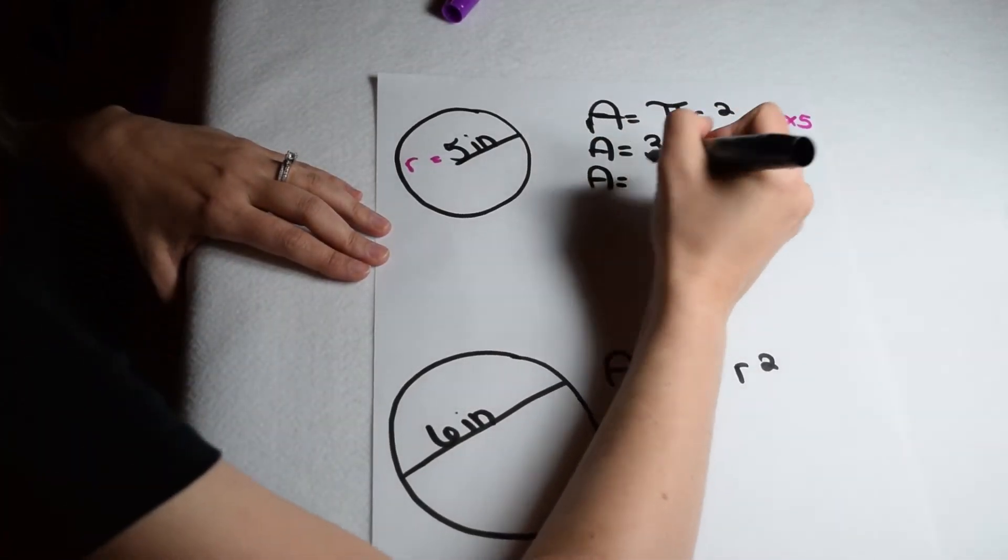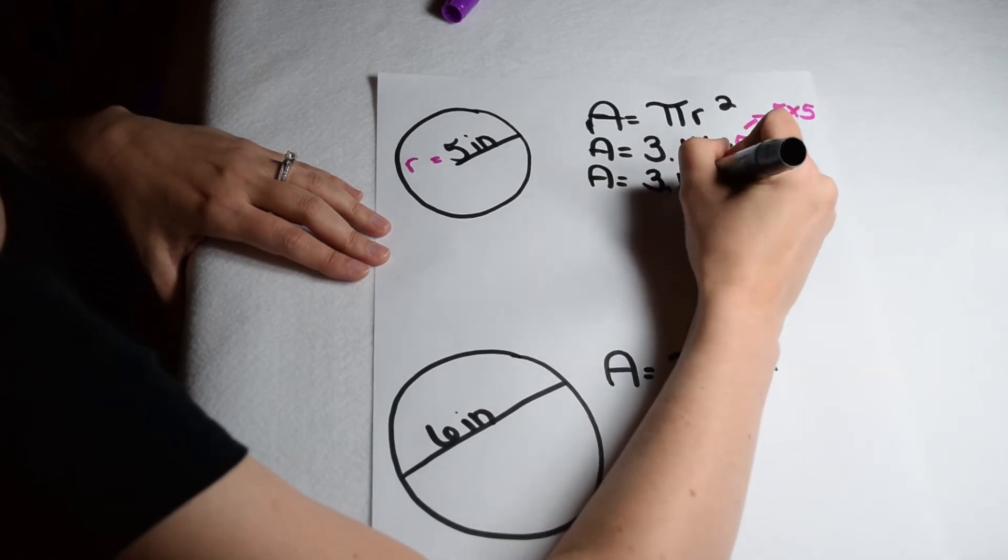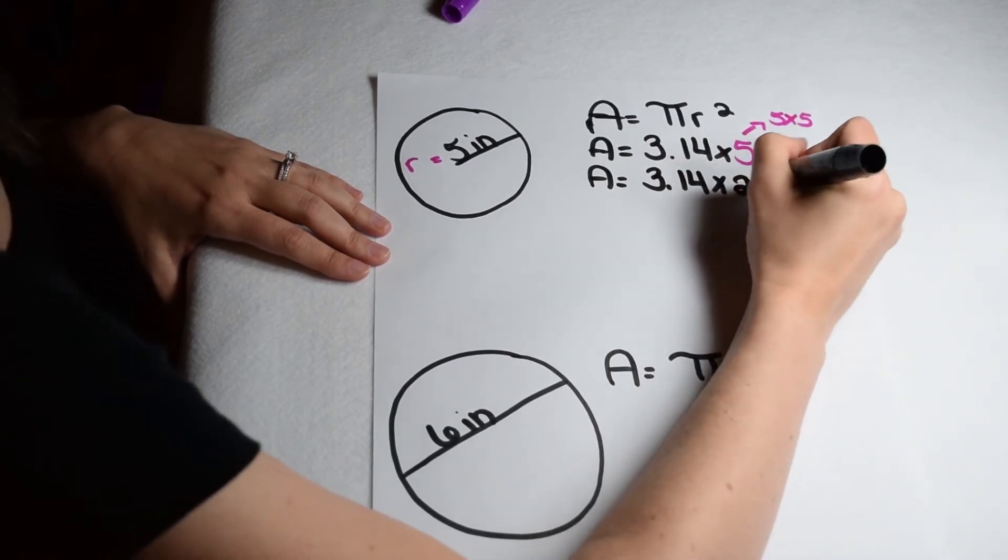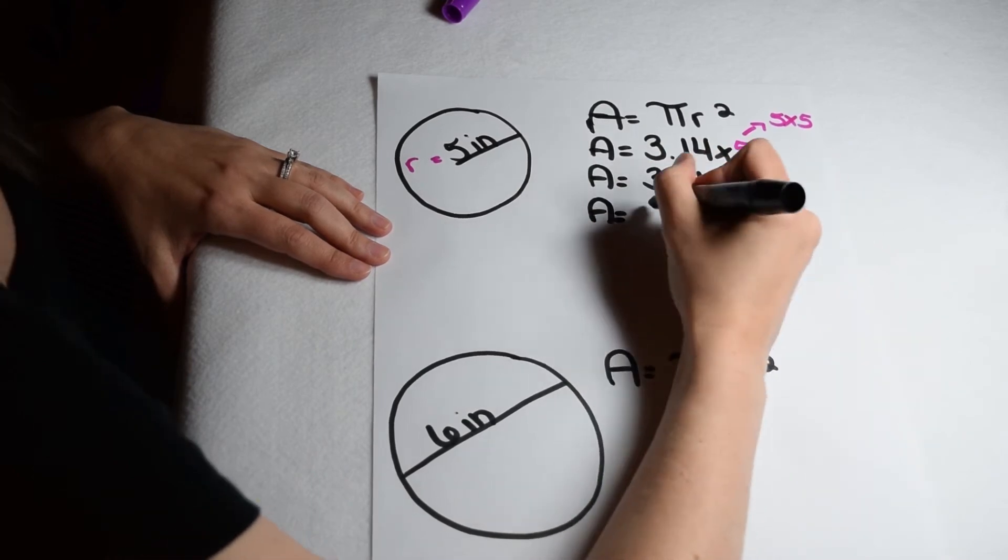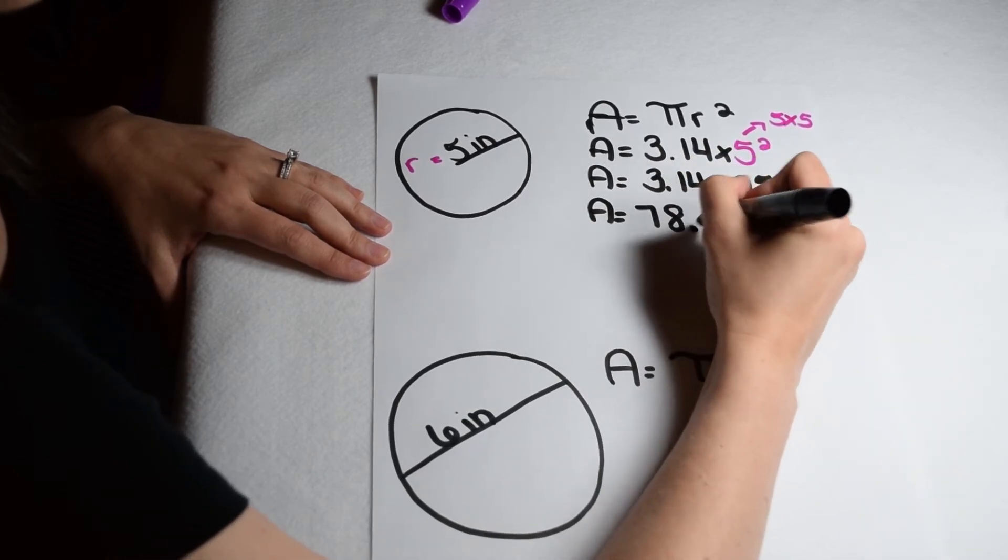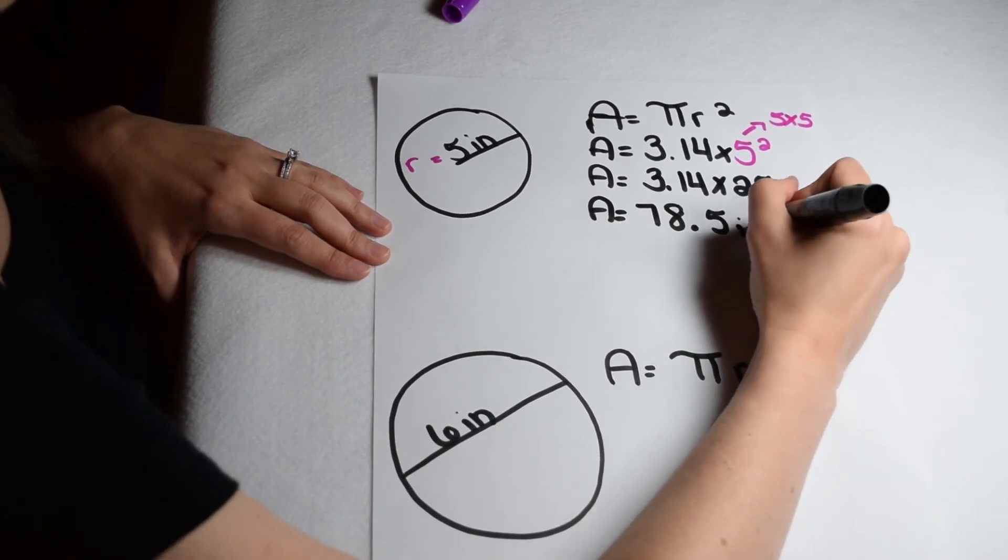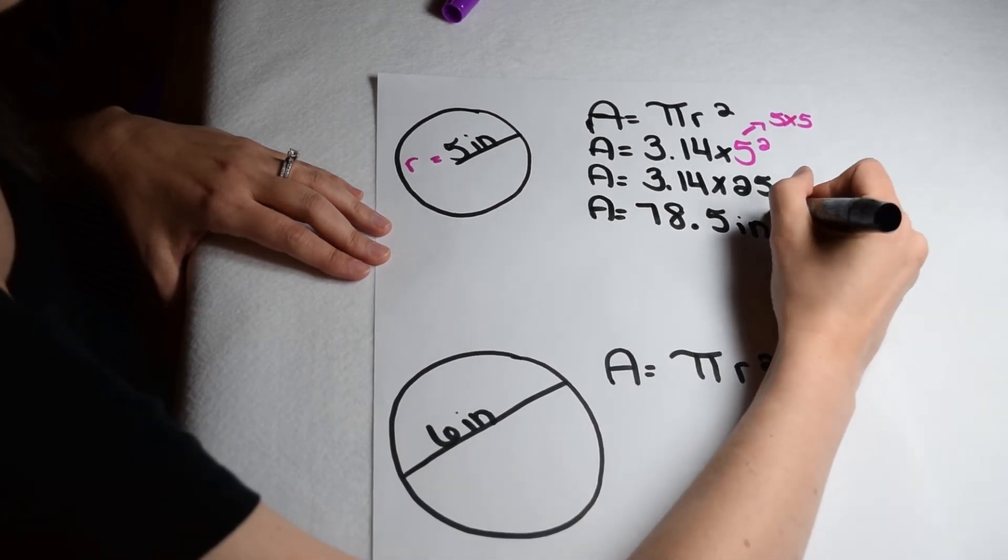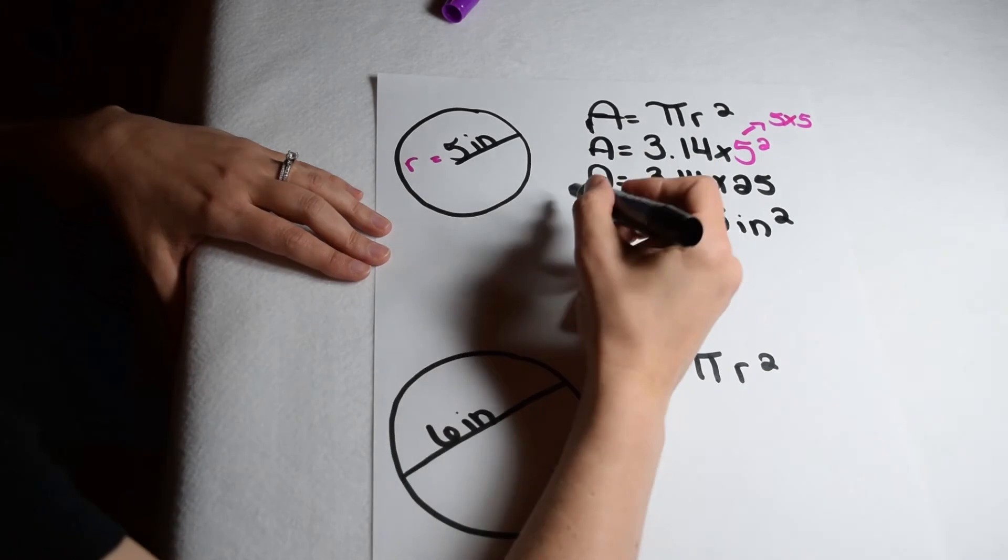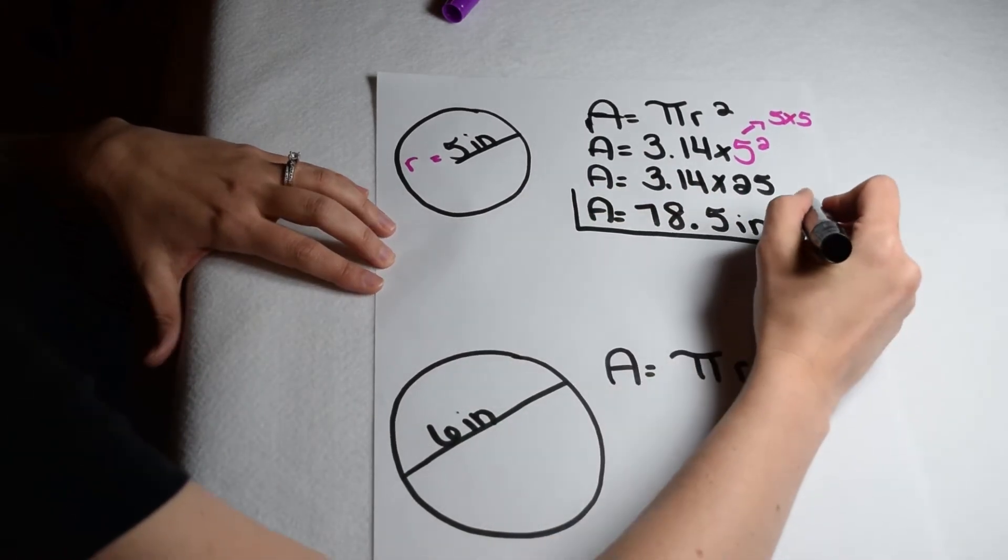5 times 5 is 25, so to find our area, I need to multiply 3.14 times 25. When I use my rules for decimal multiplication, that's going to give me 78 and 5 tenths. Since my circle is labeled in inches, my area needs to be labeled in square inches. So the area of our circle comes out to be 78 and a half square inches.